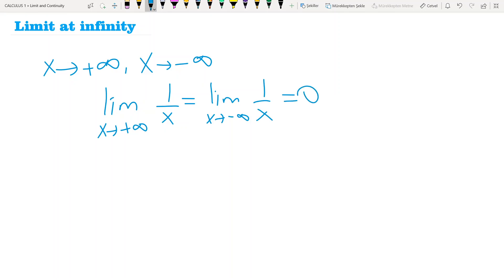You may remember the graph of 1 over X is something like this. When X tends to infinity, plus infinity, the function approaches the point 0. And when you go to minus infinity, the function again approaches the point 0.